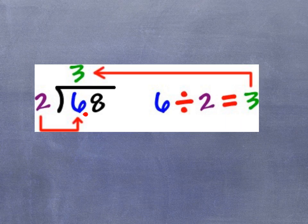I need to take the 6 and divide it by 2. 6 divided by 2 equals 3, so the 3 goes on top of the 6.